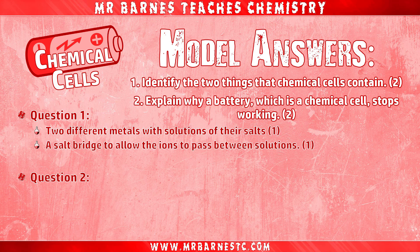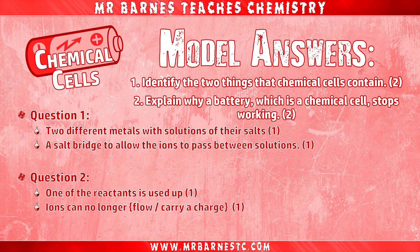Question two: why does a battery, which is a chemical cell, stop working? The key thing to remember is that one of the reactants gets used up — that gets your first mark. The second marking point is that the ions can no longer flow or carry a charge, and you can also get a mark for saying that voltage is no longer produced.